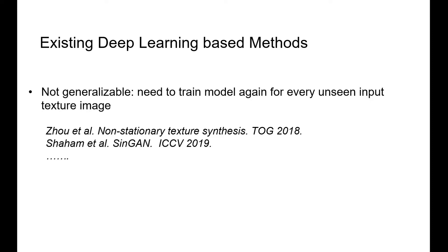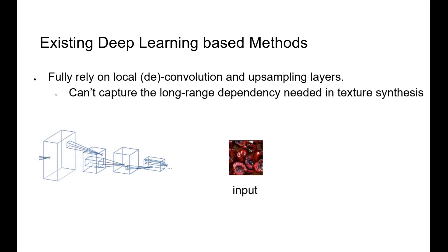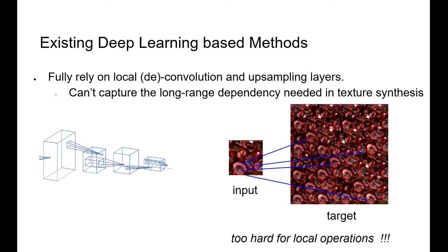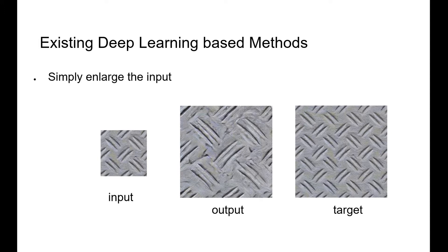That means they usually need to train the deep learning model again for every new texture. The main reason is that these existing deep learning models usually fully rely on local convolution and deconvolution layers to do synthesis. These local operations cannot capture the long-range structural dependence information required by texture synthesis. As a result, they may simply enlarge the input rather than perform reasonable synthesis, even though they've been trained based on ground-truth texture pairs.